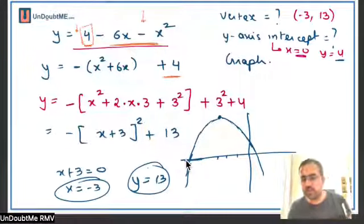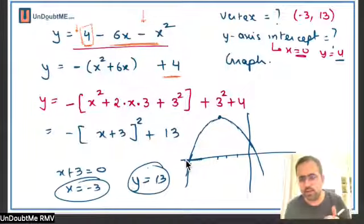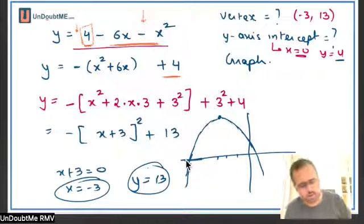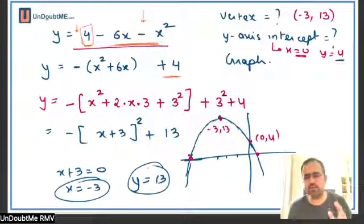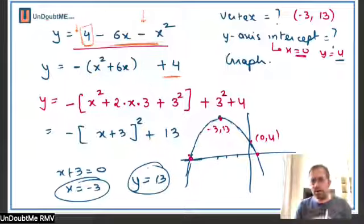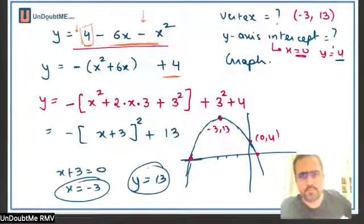The parabola will be like this — a downward shape. It is intersecting the x-axis at two points that we have to find using the formula method. So this is minus 3 comma 13 for the vertex, this is 0 comma 4 for the y-intercept, and these two x values we still have to find. This is the graph. Just have a look at everything, and if there's any doubt in any step, you can ask.